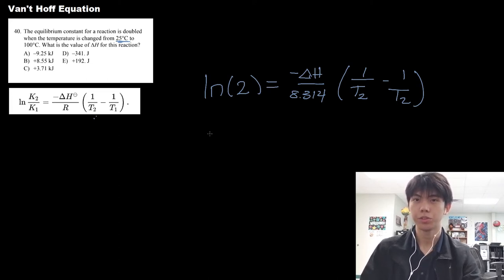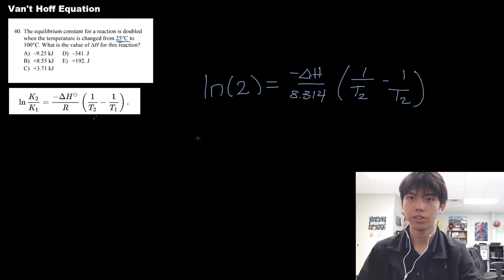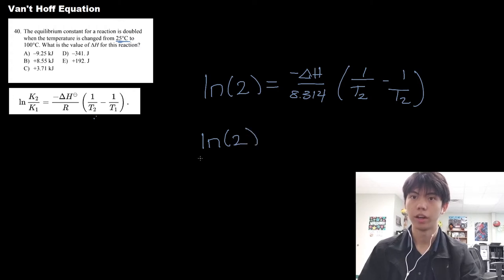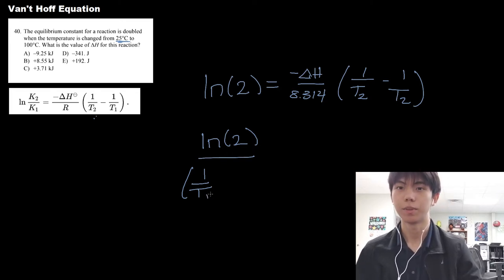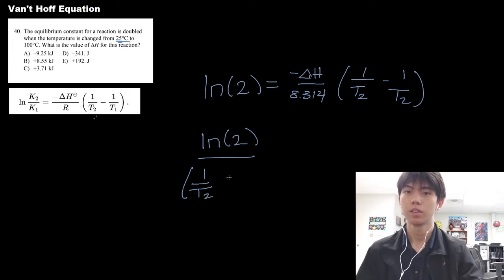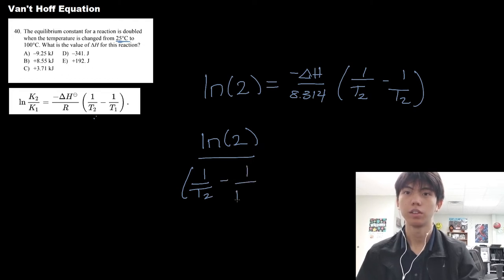So let's just use some algebra to isolate H. So it's natural log of 2 divided by 1 minus the reciprocal of these two temperatures. This should be the second temperature, so minus 1 over T1.